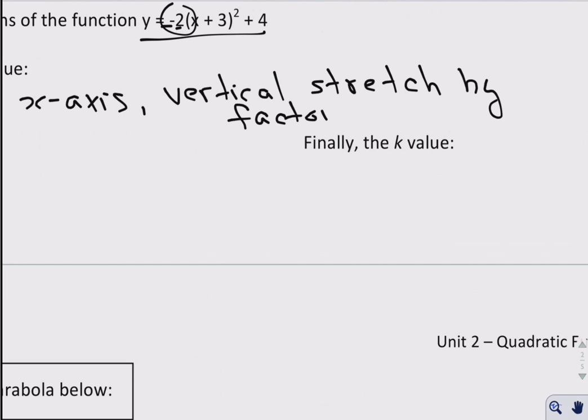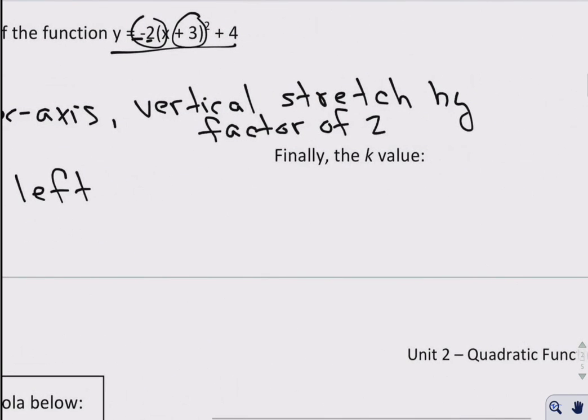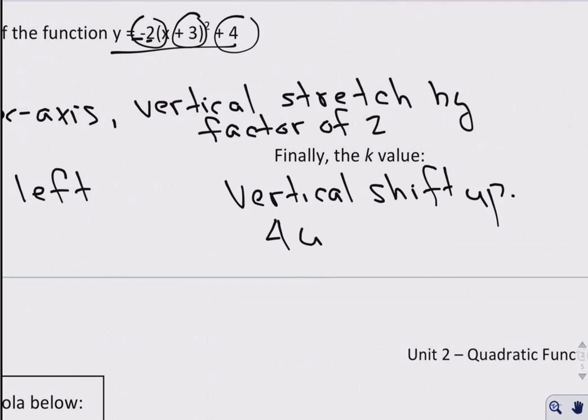And lastly, we have a vertical shift up, and that's from the 4. So vertical shift up 4 units.